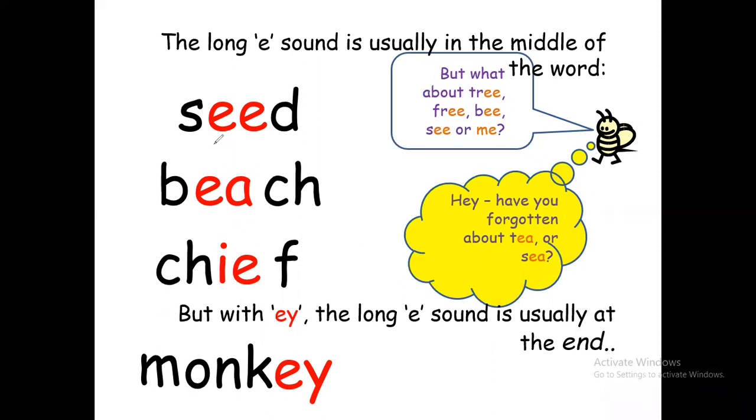Look at here: seed, beach, chief. But 'ey', the long 'e' sound is usually at the end. If we have 'ey' we have it usually at the end like monkey. But what about tree, free, bee, see, or me? We can have the long 'e' at the end of these words.